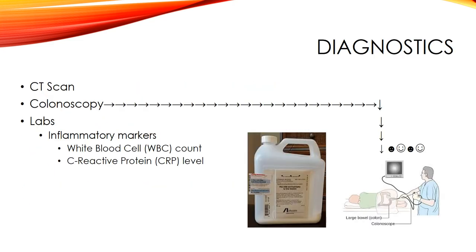For diagnostics, a CT scan and colonoscopy are performed to locate ulcers, inflamed pouches, pus, or bleeding. Lab work includes inflammatory markers such as white blood cell count and C-reactive protein levels — the higher these are, the more likely there is infection or inflammation.